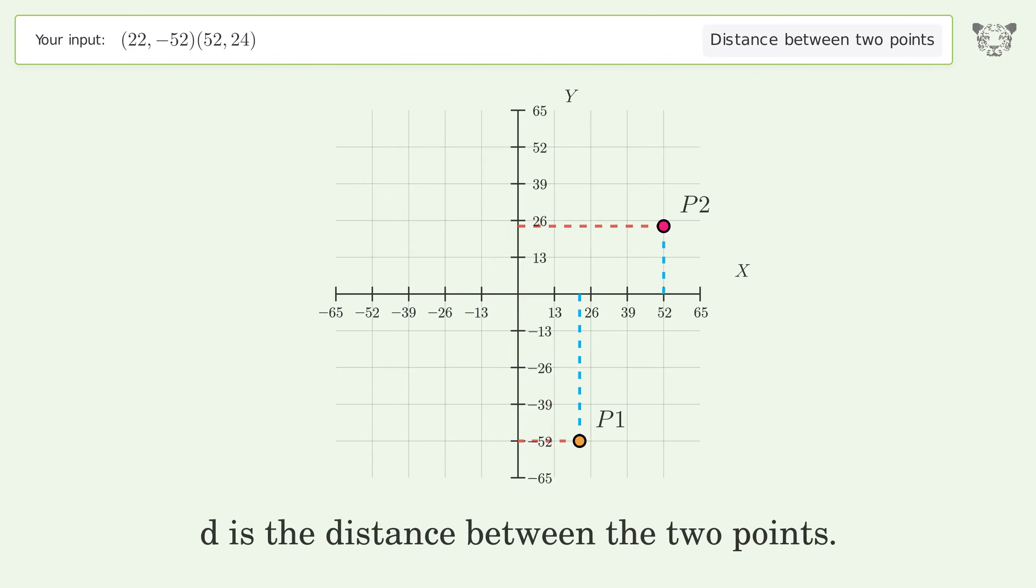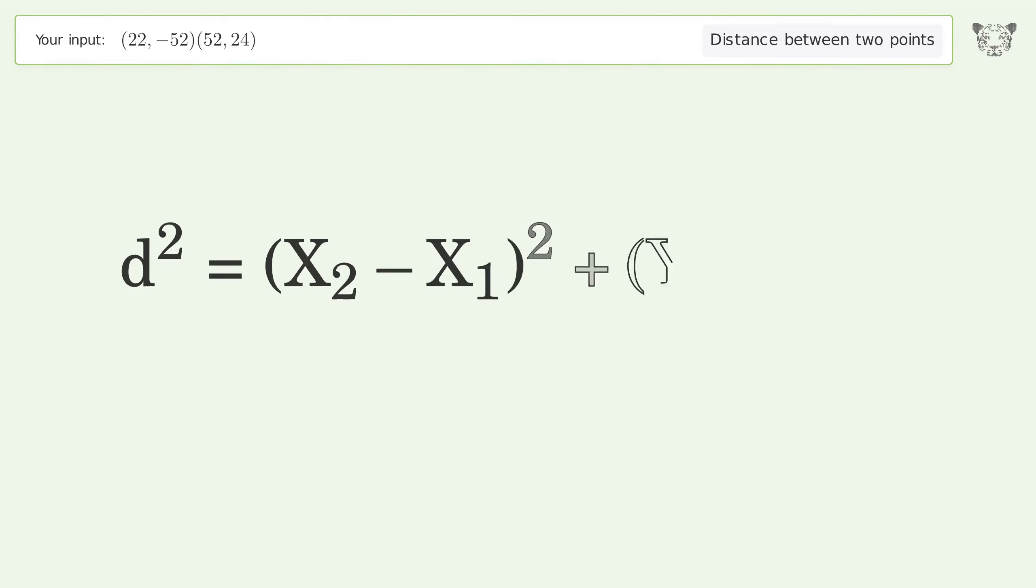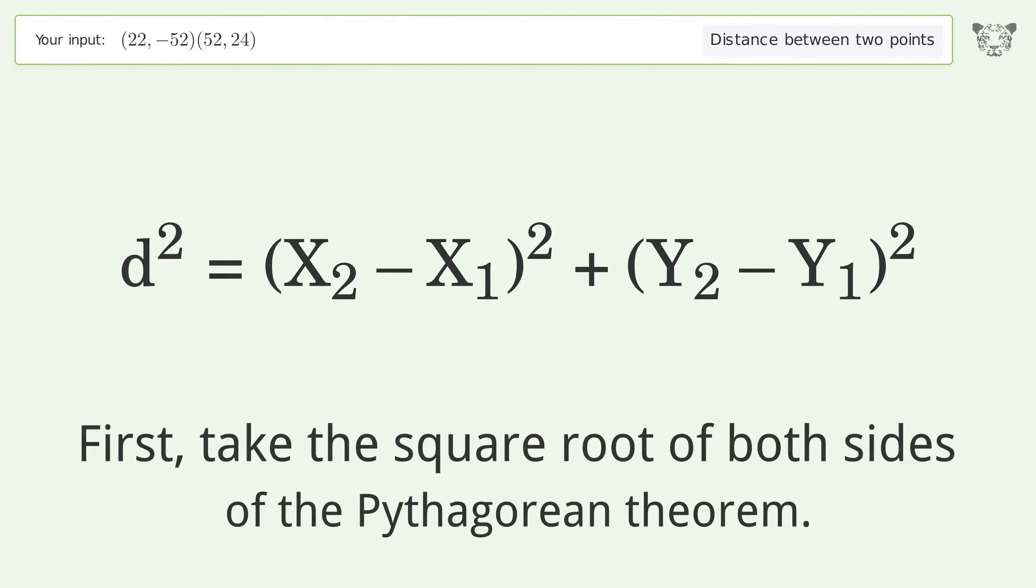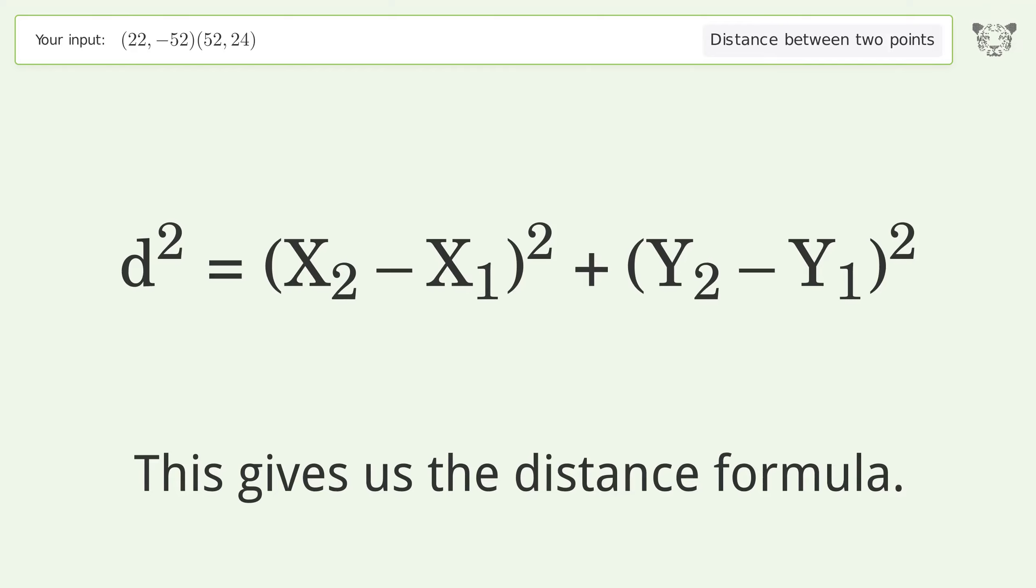d is the distance between the two points. First take the square root of both sides of the Pythagorean theorem. This gives us the distance formula.